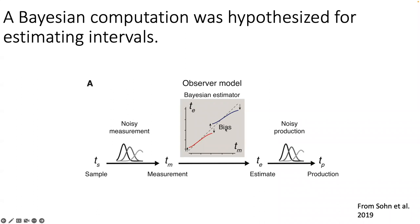There were two different distributions of intervals — short and long. The extreme intervals in each distribution are estimated as being closer to their respective means. The longer intervals in the short distribution are estimated to be closer to the mean of the short distribution, and the shortest are estimated as slightly longer — also closer to the mean. Whether the interval was drawn from the short or long distribution was cued at the beginning of each trial. The same bias is evident for the long distribution, with estimates pulled toward the mean of that distribution.